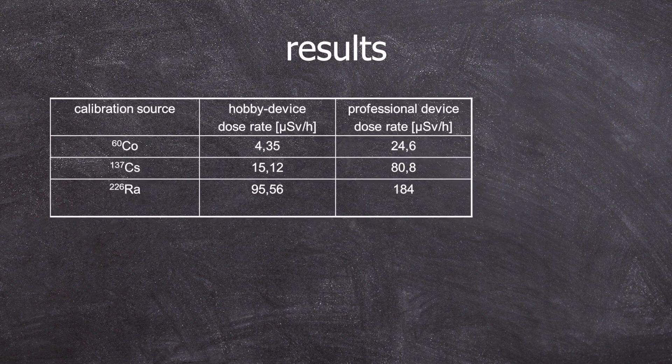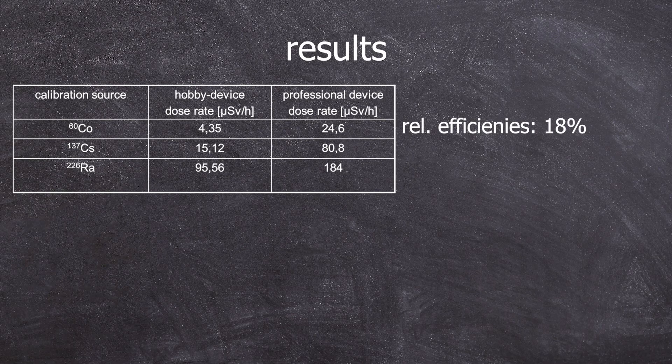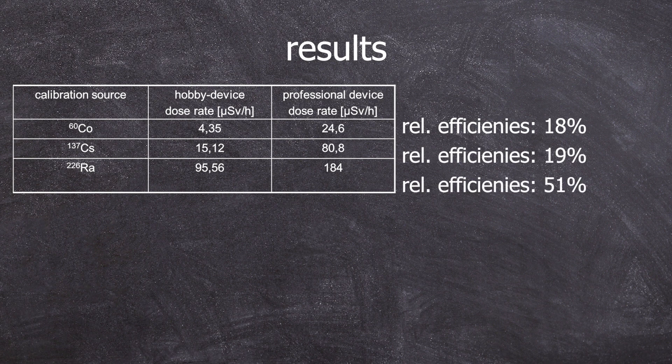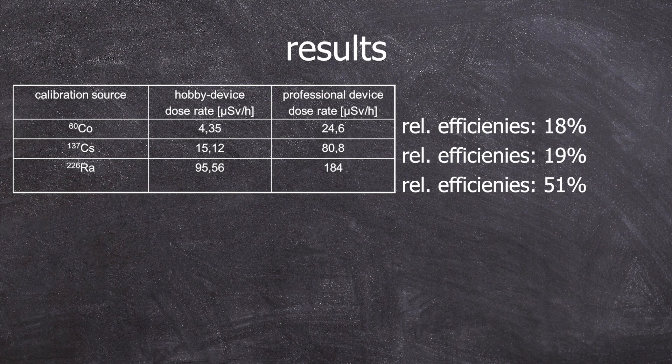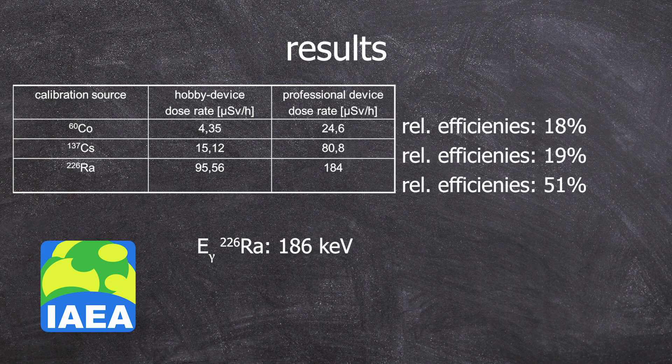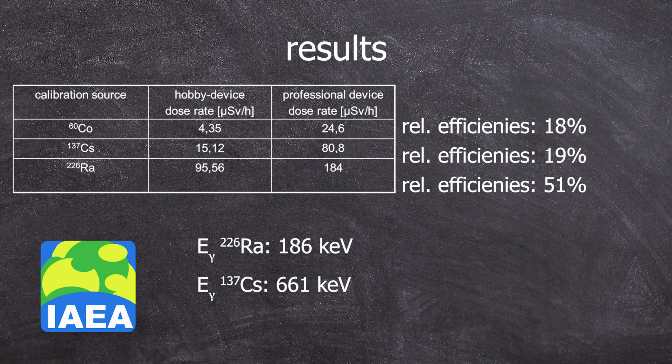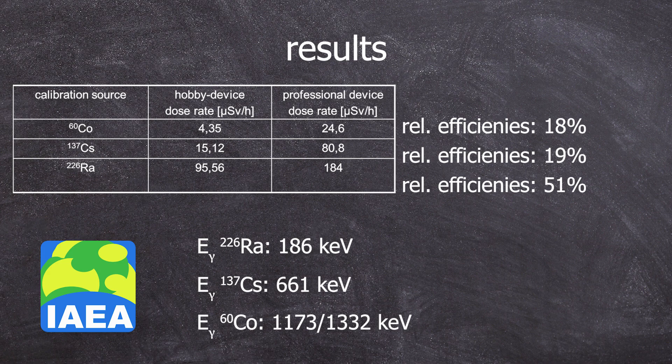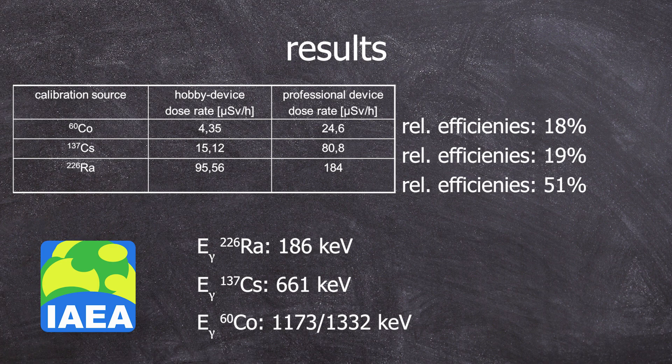Specifically, we have relative efficiencies of 18%, 19%, and 51%. I can provide you the gamma energies, but you can also find them on the Isotope browser app. Radium-226 has a 186 keV line. Cesium-137 has a 661 keV line and Cobalt-60 has one at 1173 and one at 1332 keV.